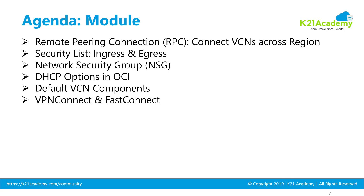Then we'll talk about two different connection methods to connect your OCI network with on-premise. In this module we'll cover at a high level two different ways: VPN connect and fast connect. We'll keep it brief here, but there is a dedicated advanced networking module where we'll go into detail about how to create them, configure high availability, and many other things related to VPN connect and fast connect.